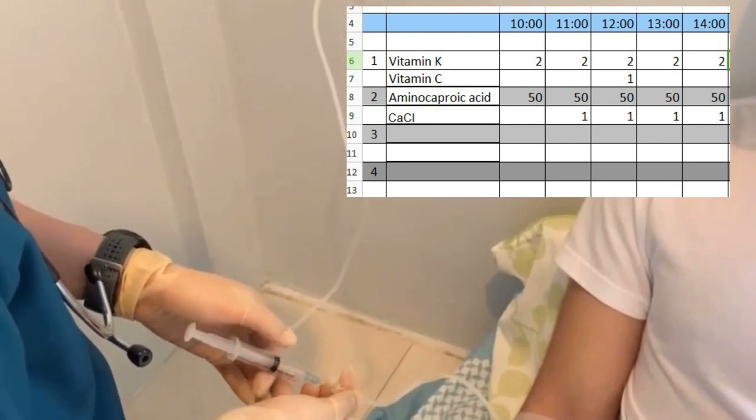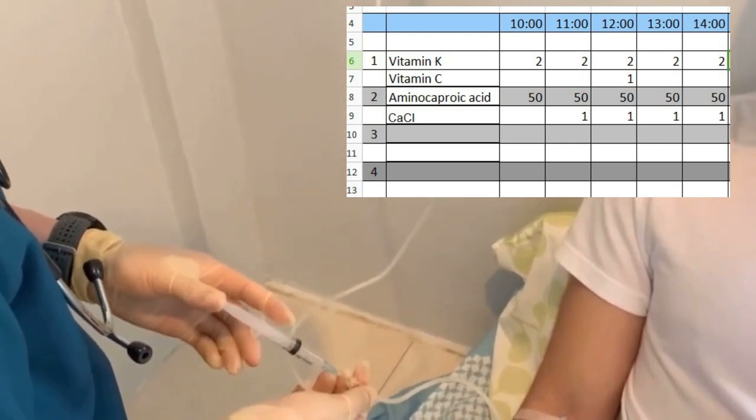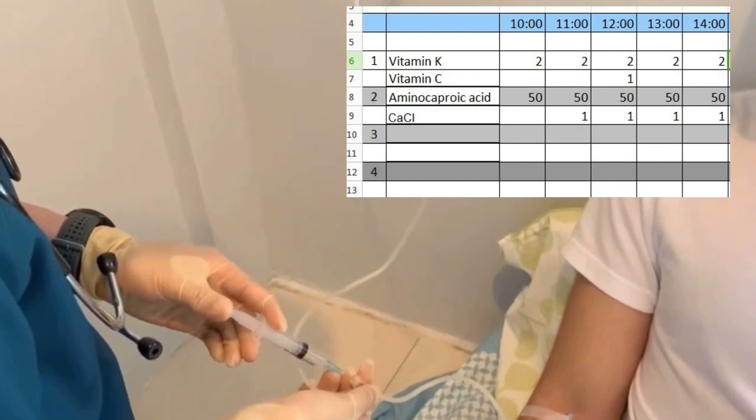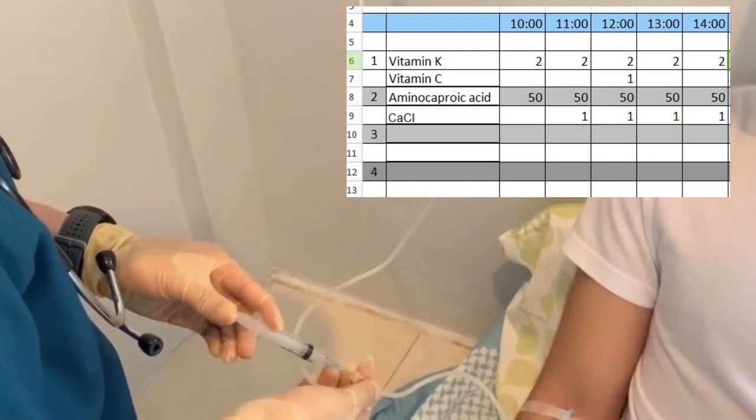And the third one is aminocaproic acid, which is given about 50ml for every hour till 2 p.m. And last is calcium chloride, which is given 1ml at 11 p.m. till 2 p.m.